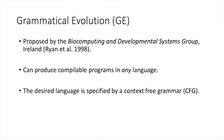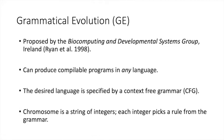To evolve programs in a language of your choice, the user of GE must write a grammar — a grammar that describes the syntactical rules of the language. GE uses a special kind of grammar called context-free grammars, which are often used to describe computer languages. Unlike GP, which uses tree structures to represent evolving programs, GE instead uses strings of integers, much like genetic algorithms do. This string of integers, also called a GE chromosome, is then translated into a human-readable program.